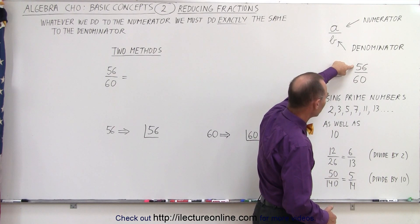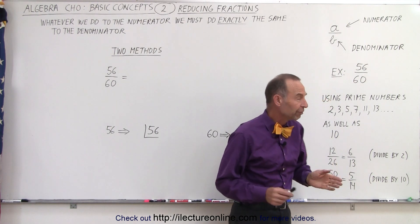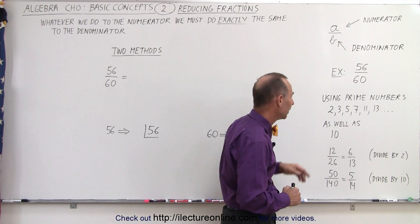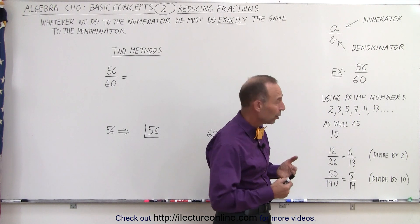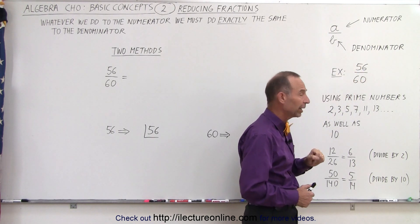For example, 56 here is the numerator, 60 is the denominator. We should also be aware of the prime numbers: 2, 3, 5, 7, 11, 13, and so forth, as well as recognizing when both numbers end with a 0. Of course, in this case, the denominator here does, not the numerator.